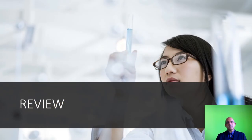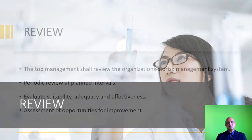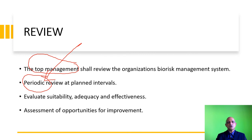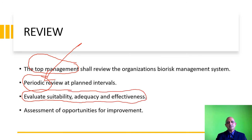We now move on to review of the process, which is part of your audit. The review is at the behest of top management and must be conducted periodically — generally an annual audit in which you call external and internal auditors to have an unbiased review of the system. Top management must evaluate the suitability, adequacy and effectiveness of the management system. If not satisfactory, it must be addressed and improved upon, and opportunities for improvement must be assessed.